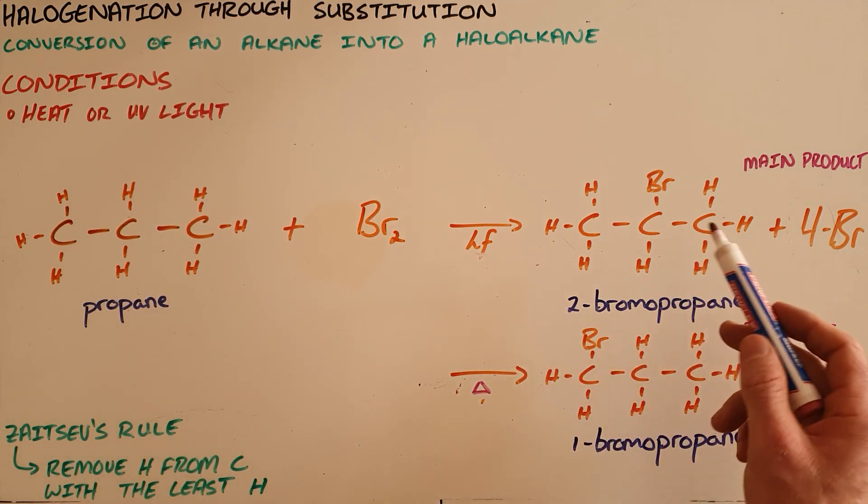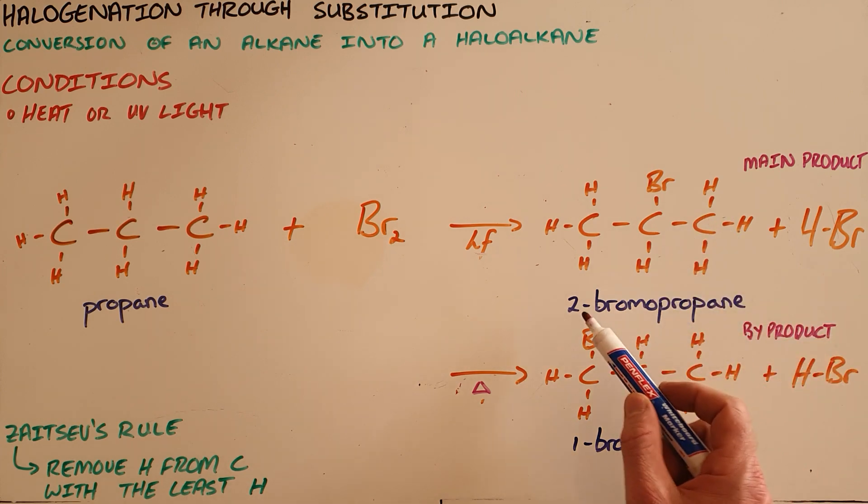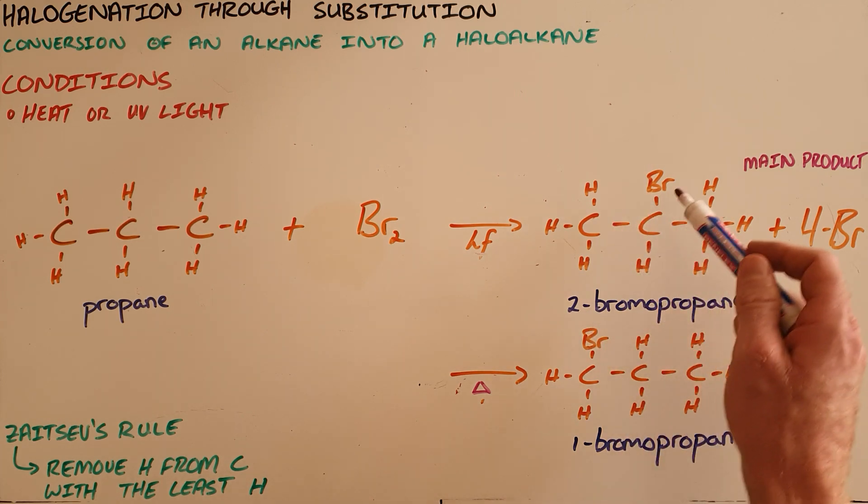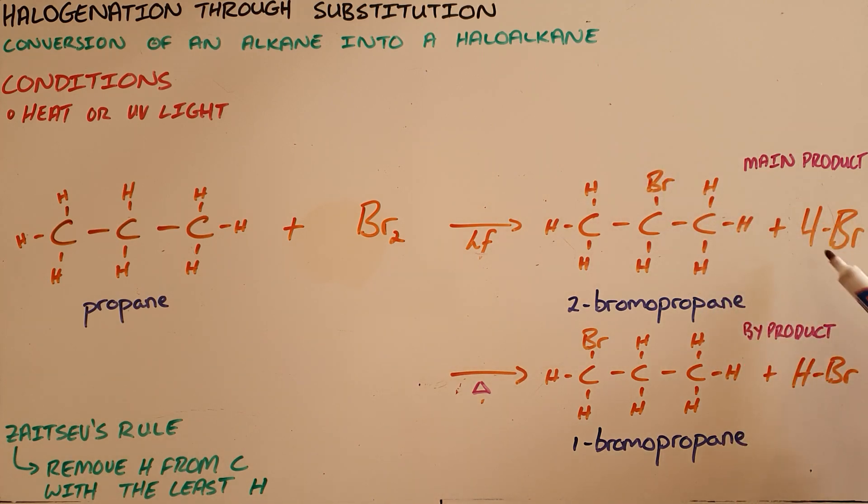That means that there are then two products possible: two-bromopropane, where a hydrogen on the second carbon has been replaced by a bromine, and hydrogen bromide as one of the products, or another possible product is one-bromopropane, where a hydrogen on the first carbon has been replaced, and hydrogen bromide still as a product.